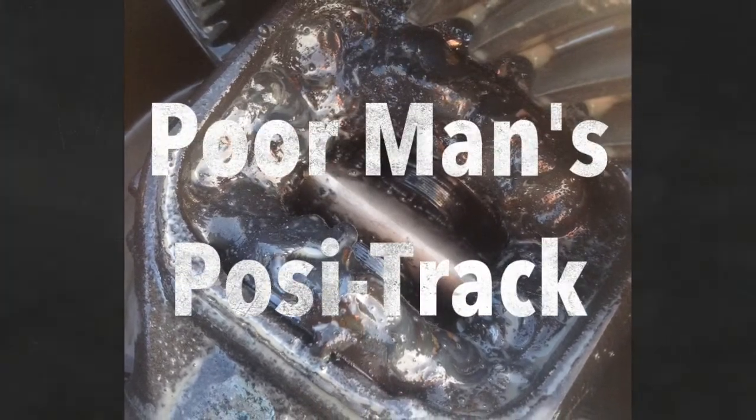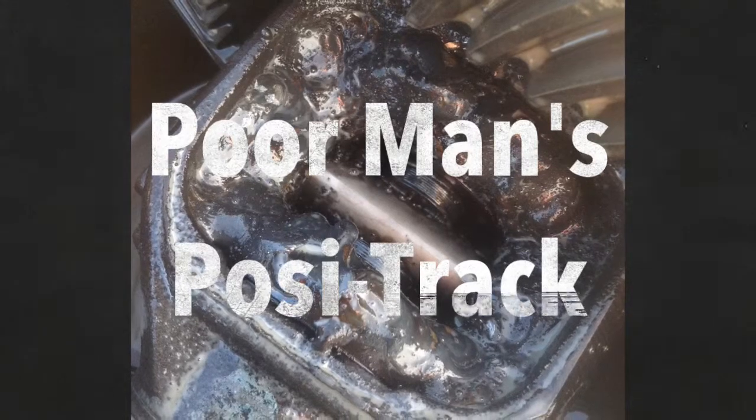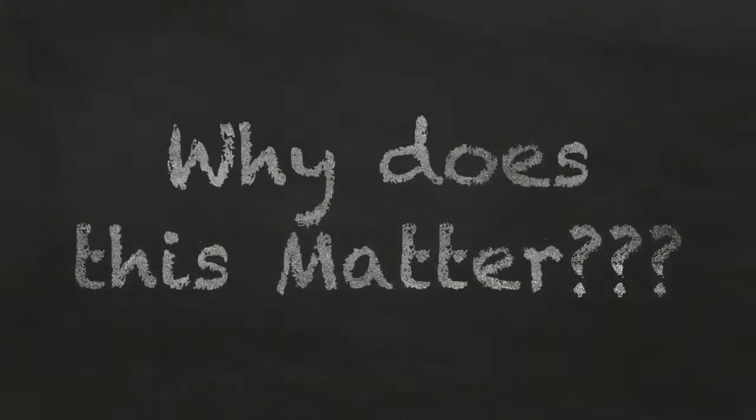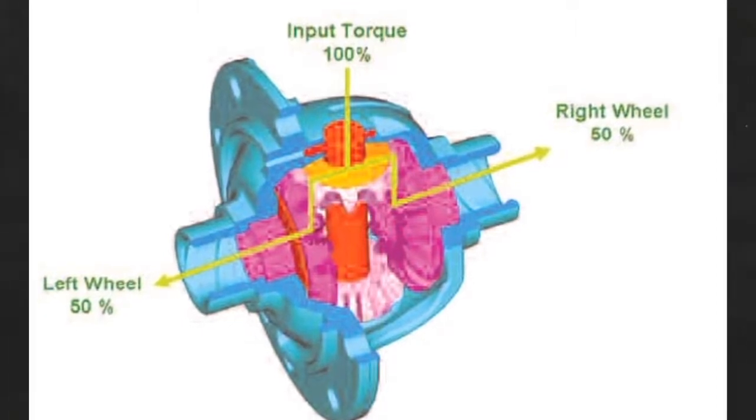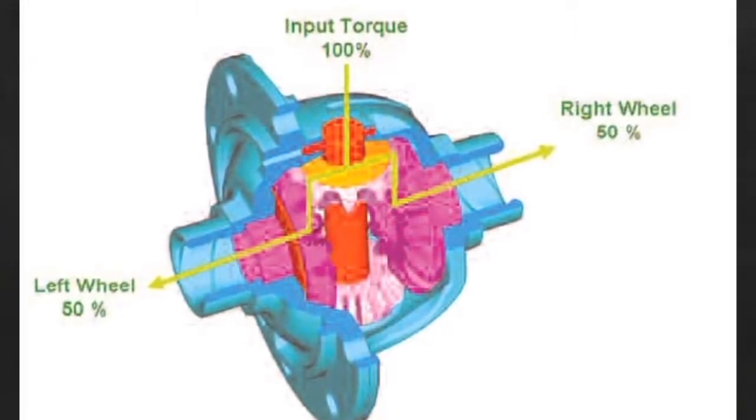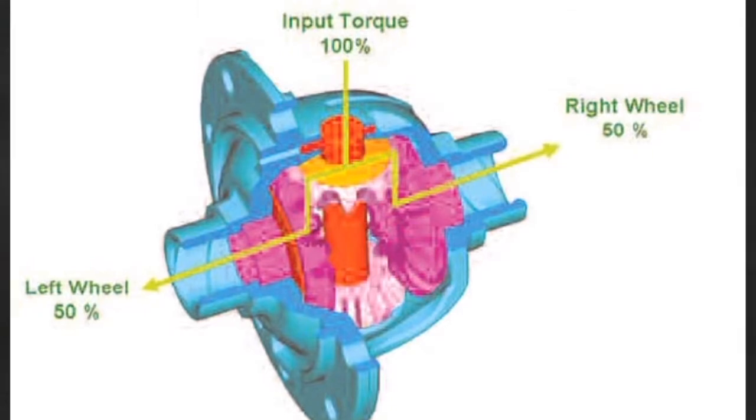Essentially creating a poor man's Positrack, as they called it. And why does this matter? Because when you use a differential the way it's designed to be, Positrack evenly distributes power to both wheels.